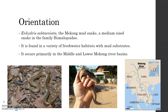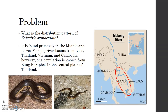The Mekong Mud Snake is a medium-sized homaloxid snake found in a variety of freshwater habitats with mud substrates, including rice paddies, streams, ponds, ditches and canals. It occurs primarily in the middle and lower Mekong river basins from Laos, Thailand, Vietnam and Cambodia. However, one population is known from Bung Bar Phat in the central plain of Thailand.